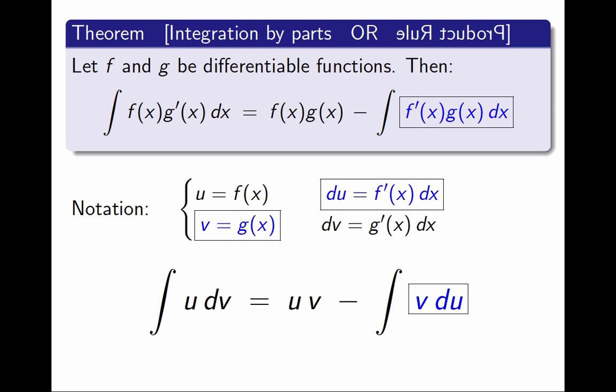And that's it. The last identity, integral of u dv equals u v minus integral of v du, is probably the most common way to write the formula for integration by parts because it is compact, it is easier to remember, and it is also easy to use.